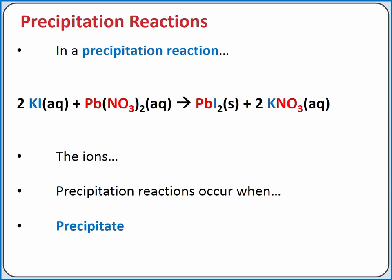We'll apply these solubility rules in writing equations for precipitation reactions. In a precipitation reaction, we add together two solutions of soluble ionic compounds and form an insoluble ionic compound, which comes out of solution as a precipitate. The cations and anions of the two soluble ionic compounds change partners. If one of the resulting ionic compounds is insoluble, the precipitation reaction occurs.